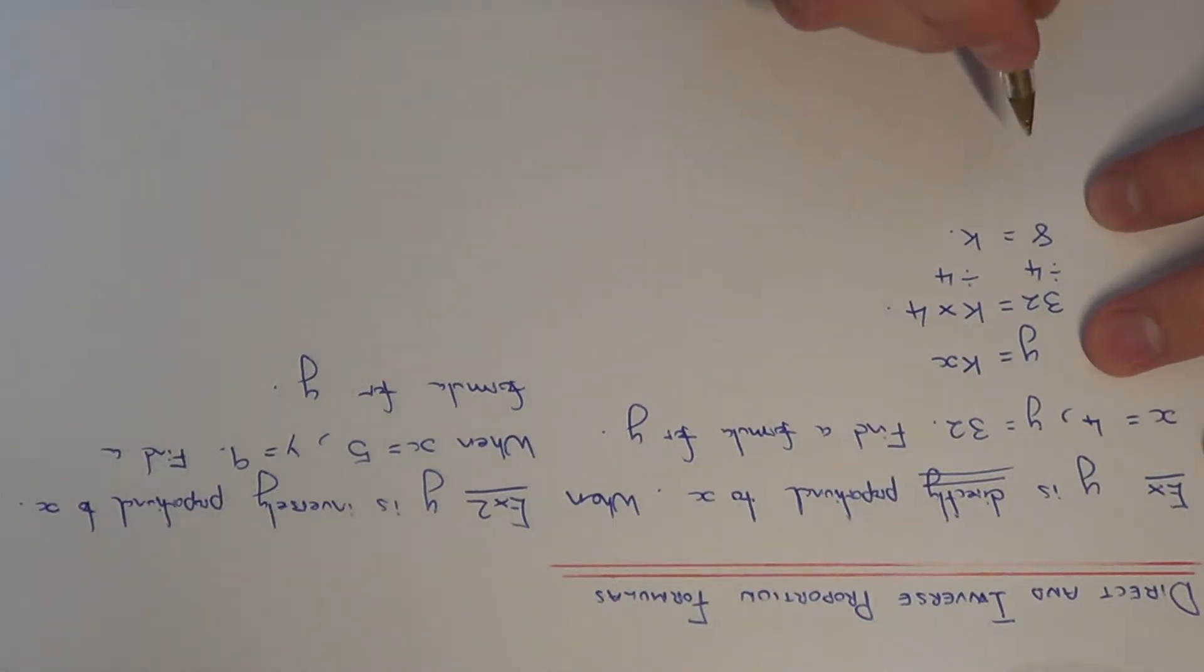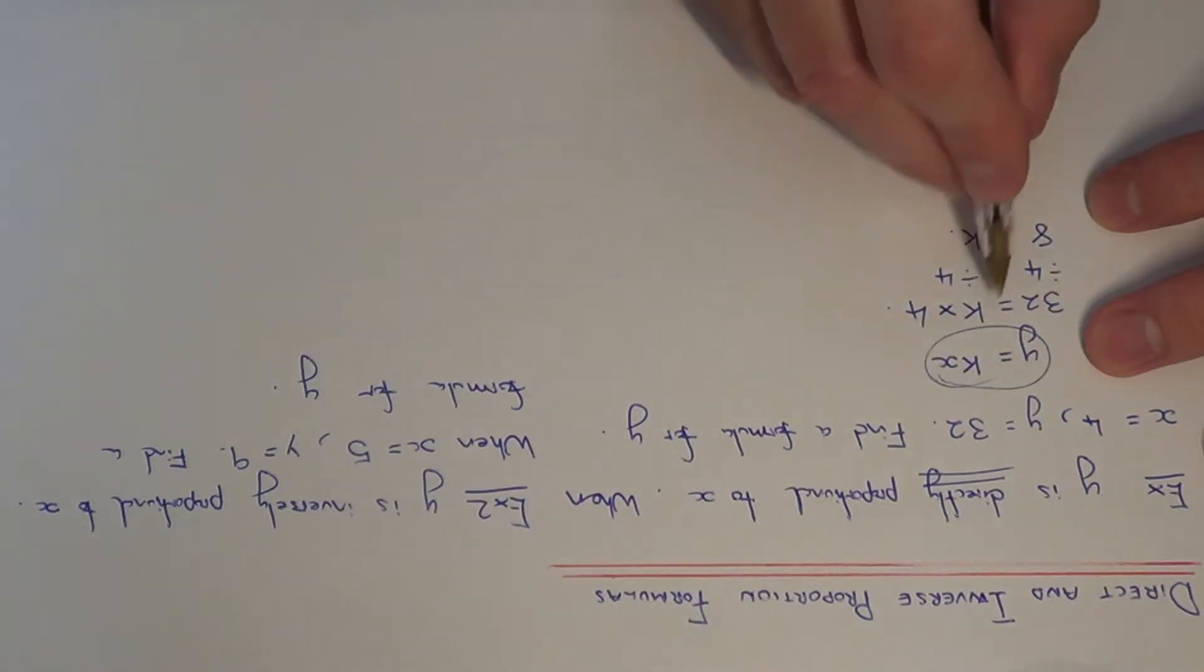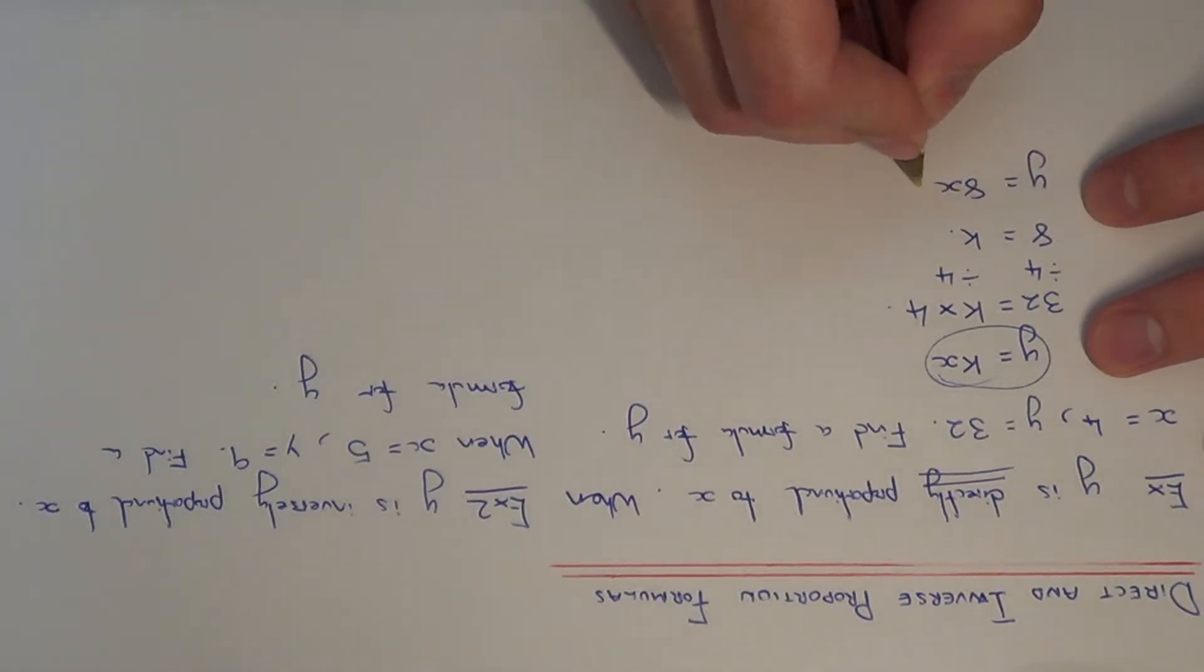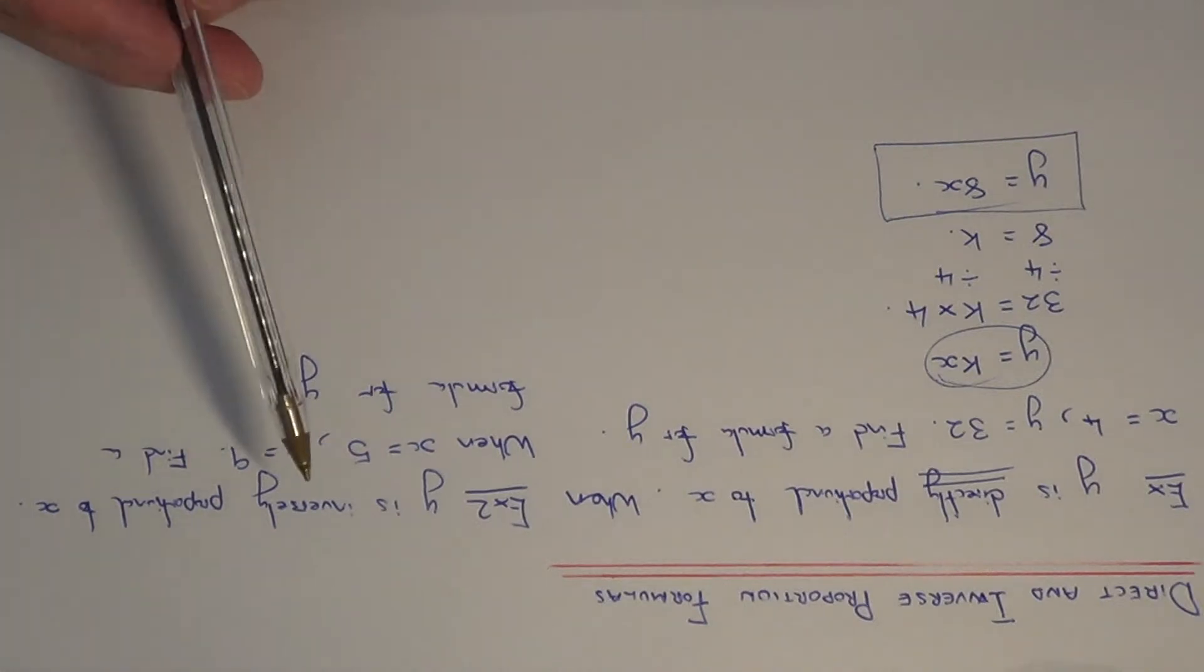The final step is to copy out my formula again and just change the value of k to 8. So we get y equals 8x, and this is our final answer. Let's move on to example 2.